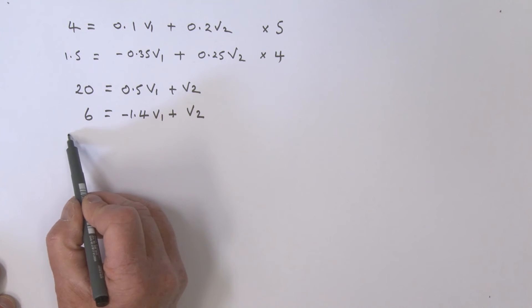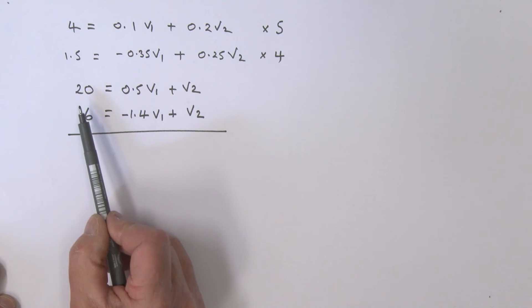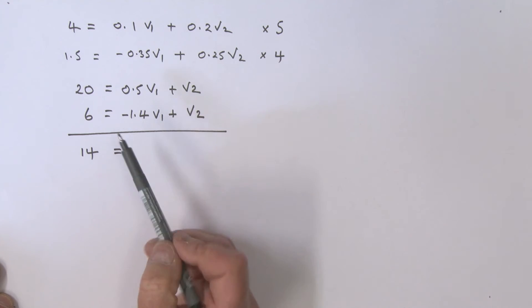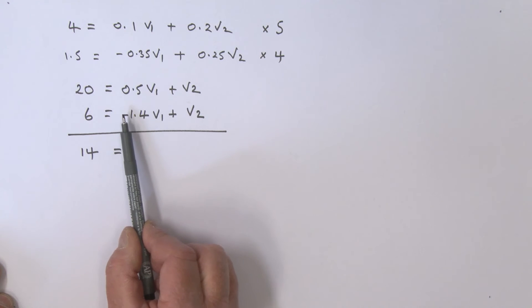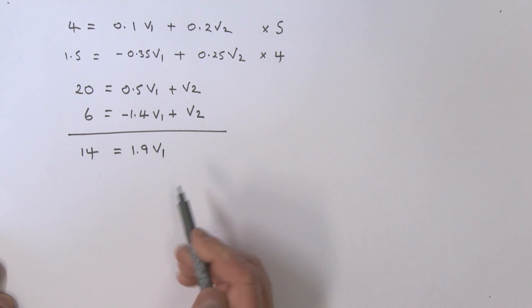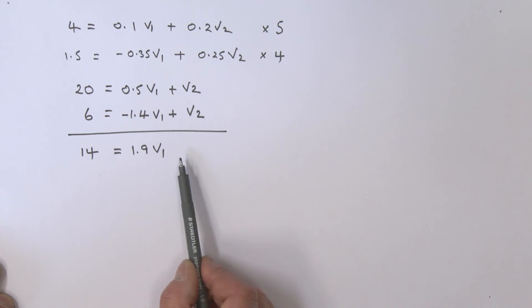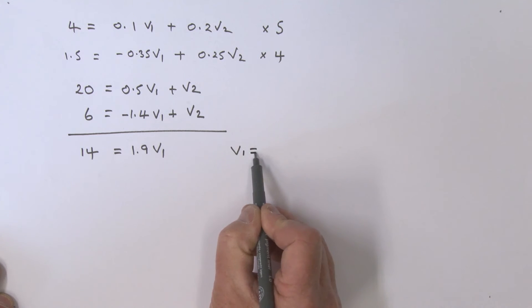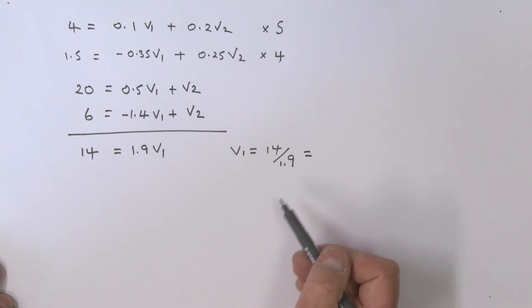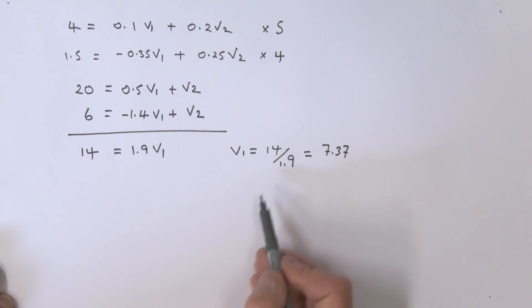Subtracting the second from the first: 20 minus 6 gives 14. For V1: 0.5 minus (minus 1.4) gives 1.9 V1. The V2 terms cancel. So V1 equals 14 divided by 1.9, which rounds to 7.37 volts.